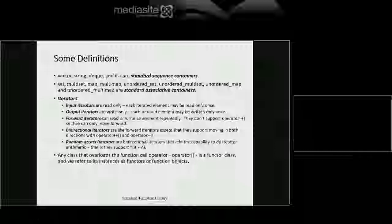Containers, iterators, and algorithms together form the STL. The algorithms are all based on function objects — either a function pointer, functor, or lambda. Algorithms typically take a start iterator and end iterator defining a range, and a function object applied to each element. Notice two things: the algorithm doesn't care what the underlying container is, because it just uses that uniform interface to step across it; and you can operate on any segment of a container by simply giving a different start iterator.